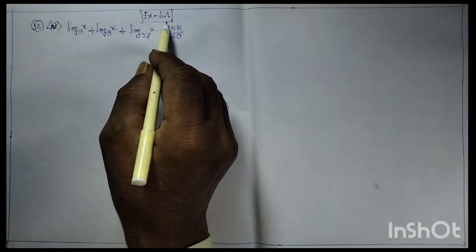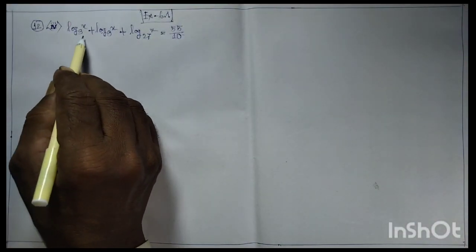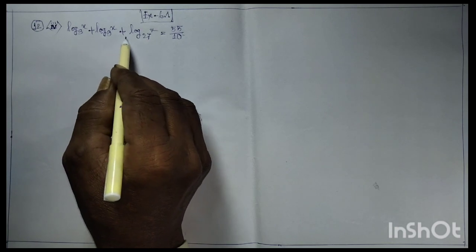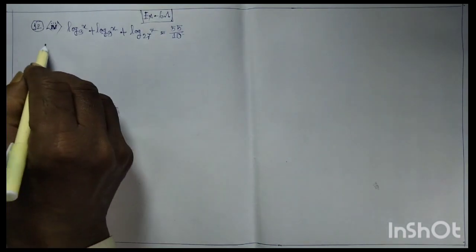Arrangement 8 is for Class 9, Exercise 6.1. The given equation is: log(2/x) + log(9/x) + log(27^x) equals 55 by 10.